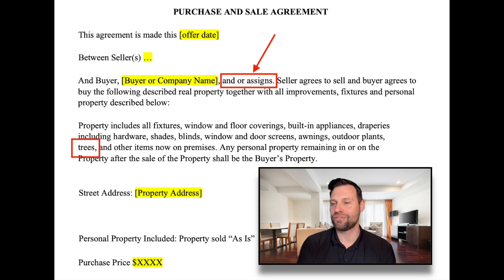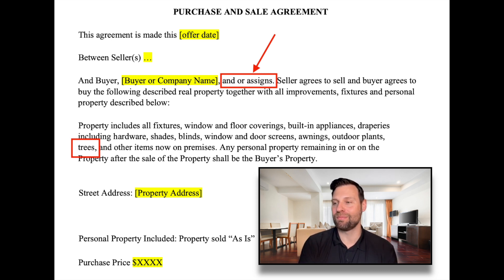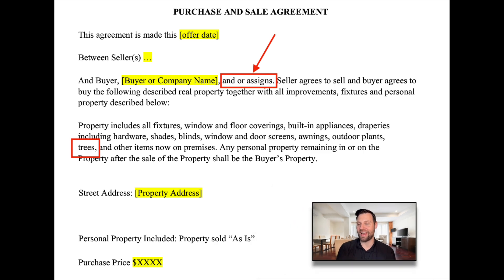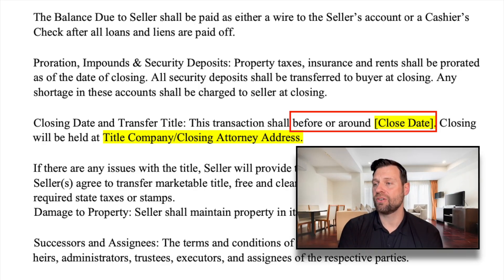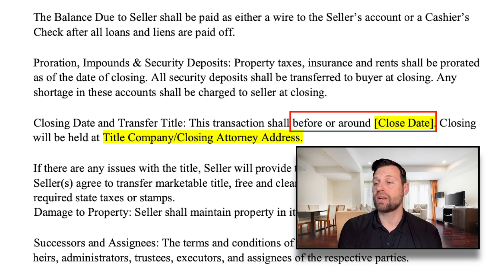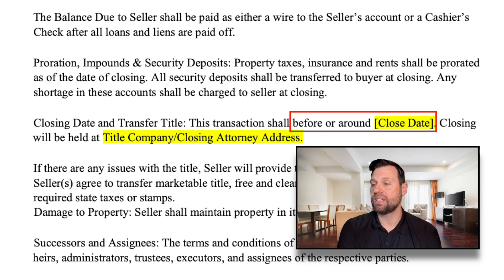As a side note, I found it kind of interesting that this contract specifically points out that the trees stay with the home. But there's probably a good chance that something happened before that necessitated adding this to the contract. Looking at this second section here, really the only thing that jumped out to me — if I were a homeowner and this contract were presented to me — is regarding the close date.